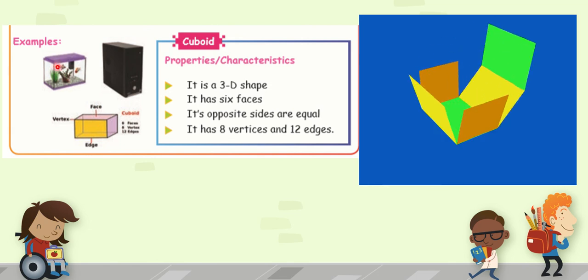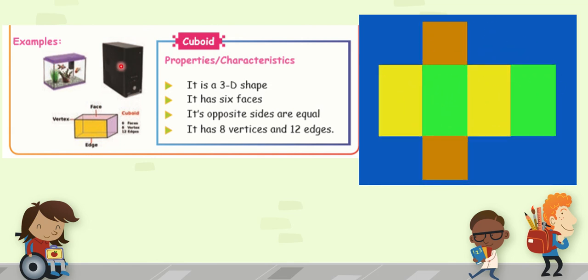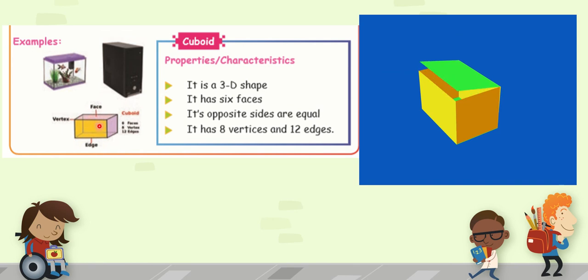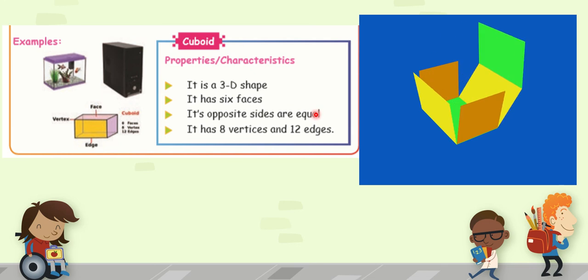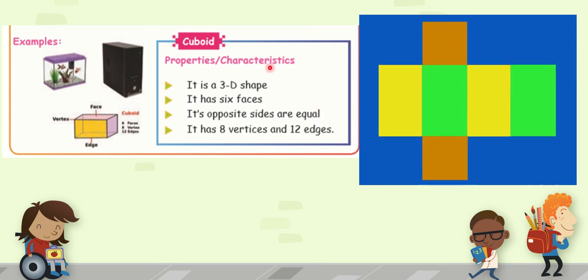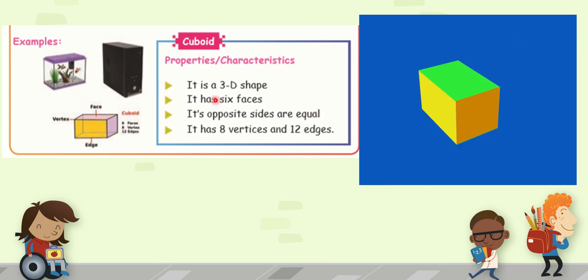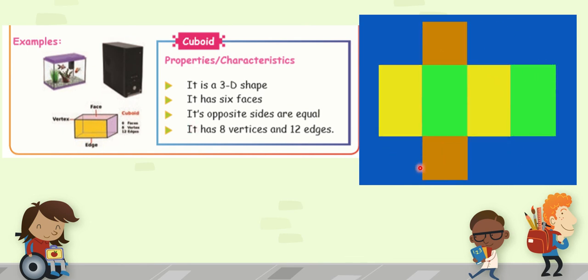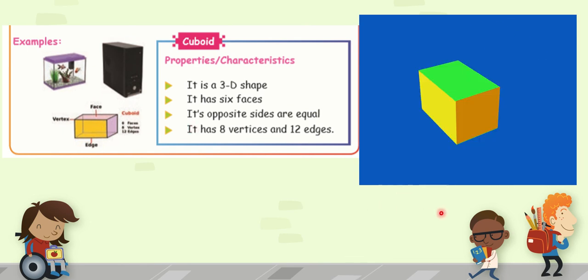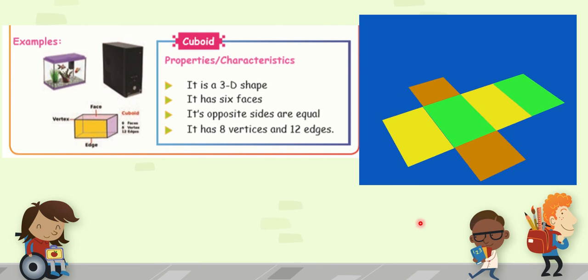This fish tank is an example. Then this speaker is an example. Then this chalk box is an example for cuboid. So we studied 2 three-dimensional shapes. First one is cube and second one is cuboid. Thank you students.